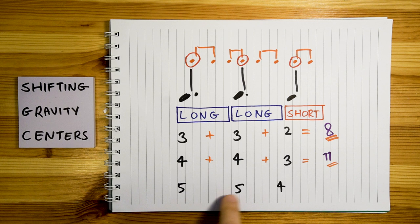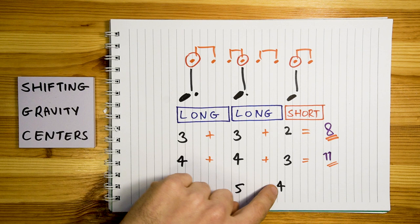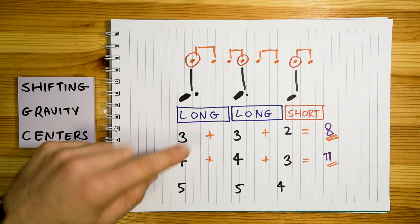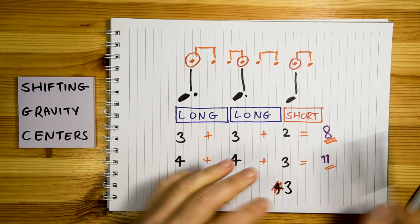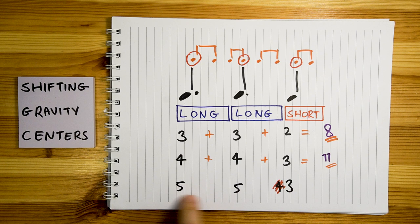Oh, this doesn't work as well. I mean, it sounds cool, but you can really hear that the 4 is significantly faster. So I can't really say that it sounds like a smooth, cohesive pulse. But we can try 5-5-3 — it's still shorter than 5, so it keeps the long, long, short in check. Let's see. It works. I do have a theory about why the 3 works but the 4 doesn't, and my Patreons will get a short video about it.